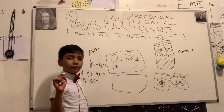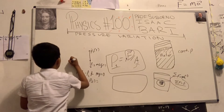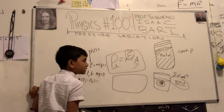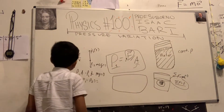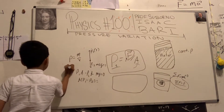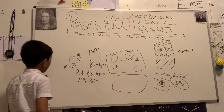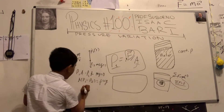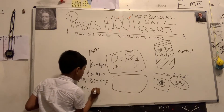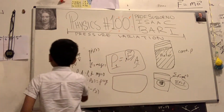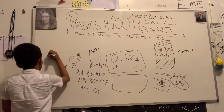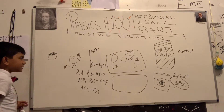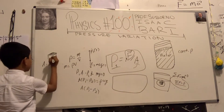Now we know that M is equal to Rho times V, since density is mass per unit volume. So that means mass is going to be equal to Rho times volume, giving us Rho times V times G. Now, what is the volume of a cube? That would be the area of each face times the height.